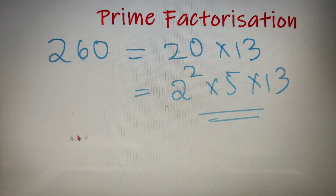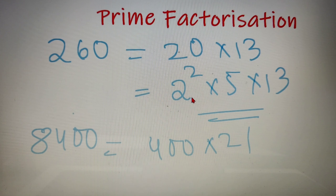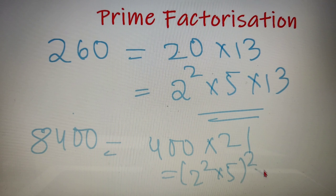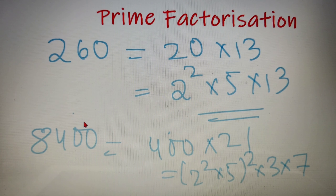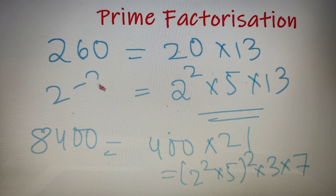Let's take another example — suppose we have to prime factorize 8400. I know 8400 is equal to 400 into 21. Now 21 is equal to 3 into 7, and 400 is equal to 20 squared, and 20 is equal to 2 squared into 5. So the final answer is 2 squared into 5, whole squared, into 3 into 7. You can see how fast we can prime factorize these numbers. From a competitive exam point of view, prime factorization is very important because at least 2 to 3 questions are based on it, either directly or indirectly.